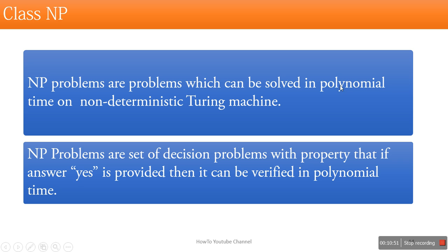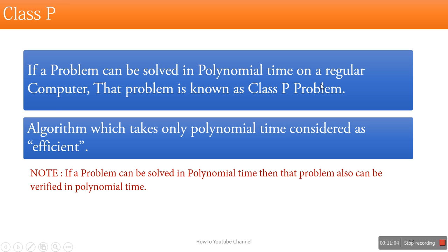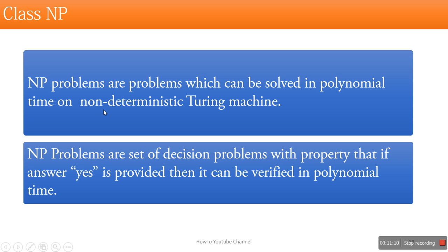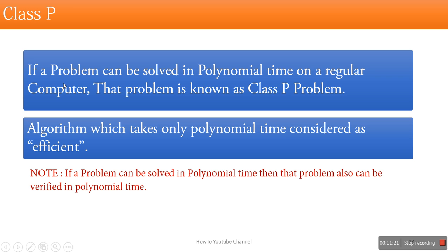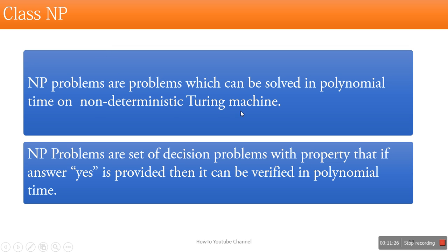What is the meaning of 'can be solved in polynomial time on a non-deterministic Turing machine'? A non-deterministic Turing machine is much better than a regular computer. So if a problem can be solved in polynomial time on a regular computer — that is class P — this non-deterministic Turing machine is way better than the regular computer. So class P problems can also be solved in polynomial time on a non-deterministic Turing machine.